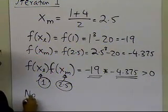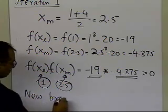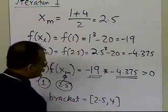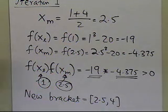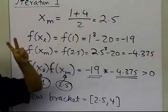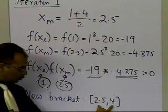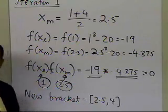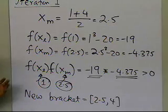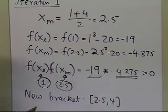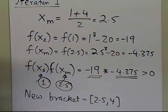The new bracket is [2.5, 4]. The initial bracket from 1 to 4 had a length of 3, and it has now been reduced to a length of 1.5 from 2.5 to 4 — that's the interval reduction happening in the bisection method. We cannot calculate any relative approximate error yet because we don't have a previous estimate. That's the end of iteration 1.